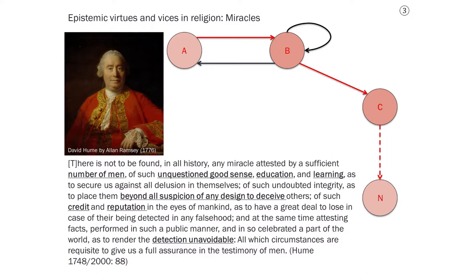So Hume thinks that we, who tend to be in the position of person N in this graph, should always disbelieve reports about miracles.